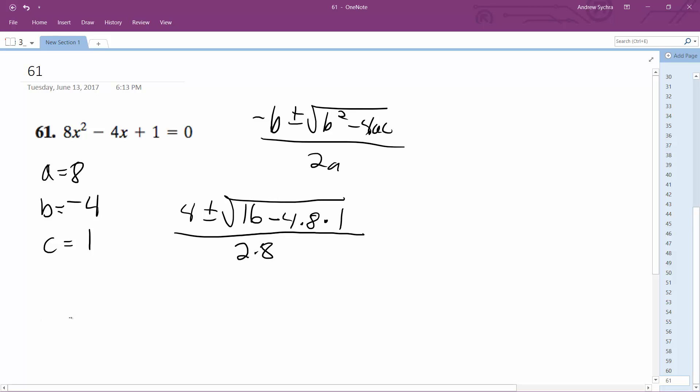So we have 4 plus or minus square root of 16 minus 32, which is negative 16, all over 16. This gives us 4 plus or minus 4i over 16.